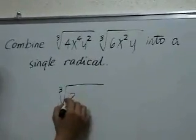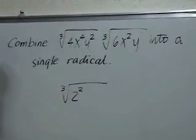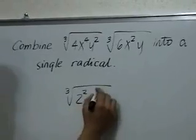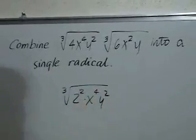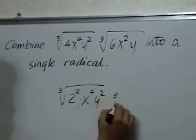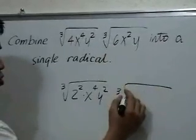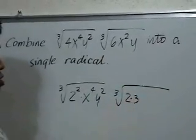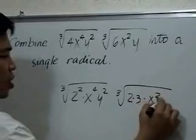the cube root of 2 squared, that's for 4, times x to the 4th y squared, and the cube root of, for 6 we have 2 times 3, times x squared y.